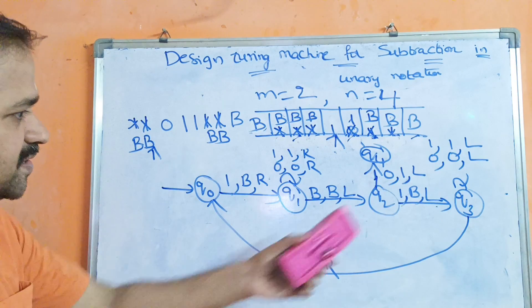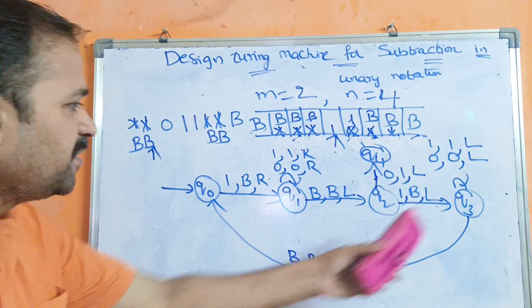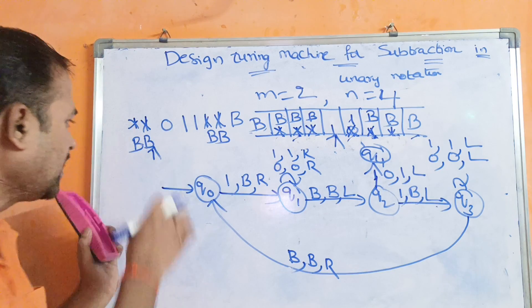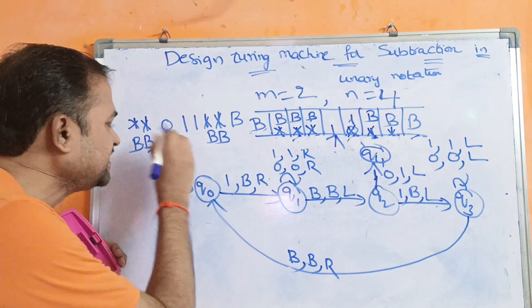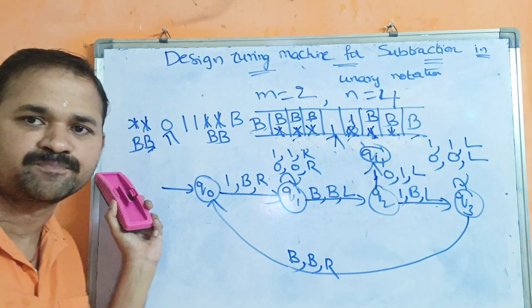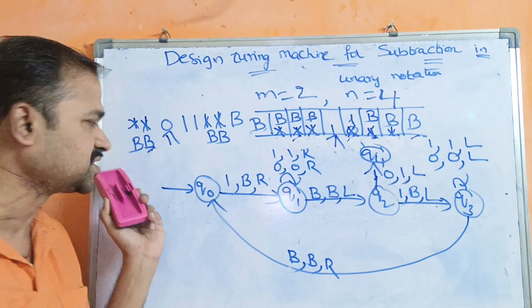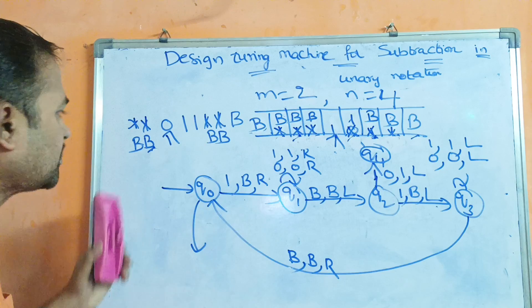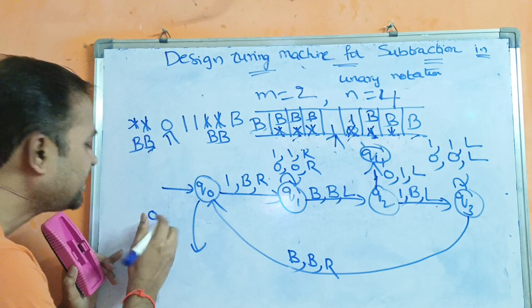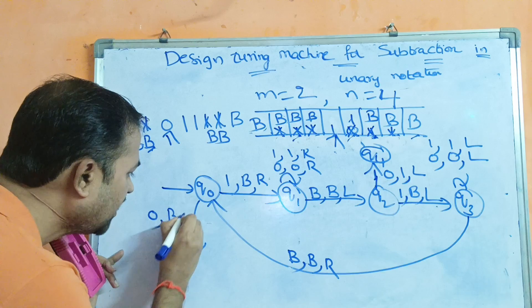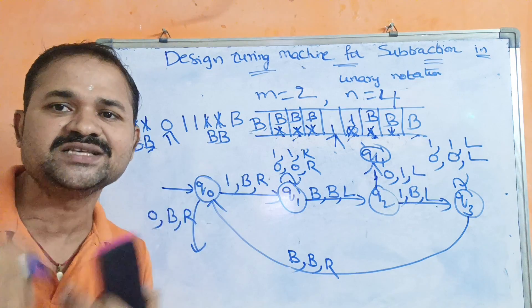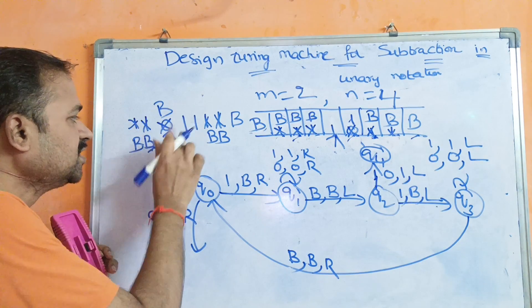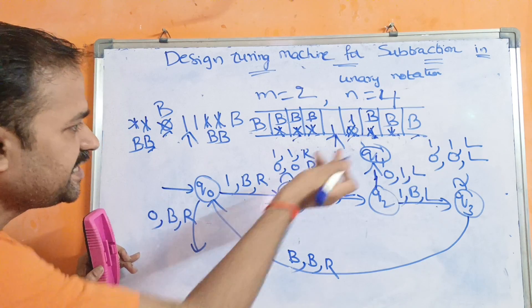When q3 reads a blank symbol, it moves right. We are now at q0 and encounter the zero separator, meaning m is exhausted. Since the result is zero — represented by all blank symbols — we replace this zero with blank and move the head right.